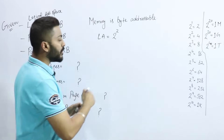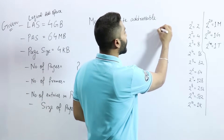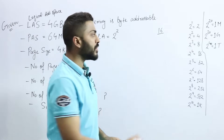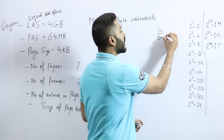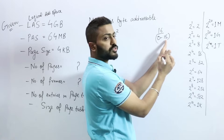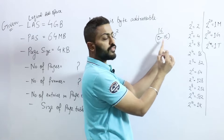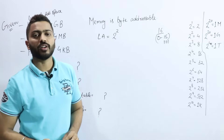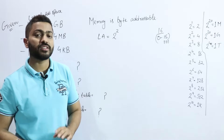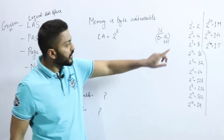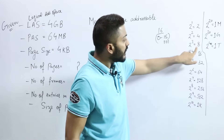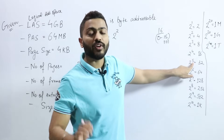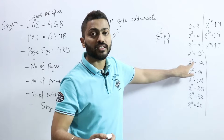We discussed earlier: if we have 16 numbers, the range is 0 to 15. Maximum number 15 is represented as 1111 — meaning 4 bits are used. Similarly, 32 can be represented in 5 bits. Here we have 4 GB. So 4 is 2 raised to power 2, and G (Giga) is 2 raised to power 30.